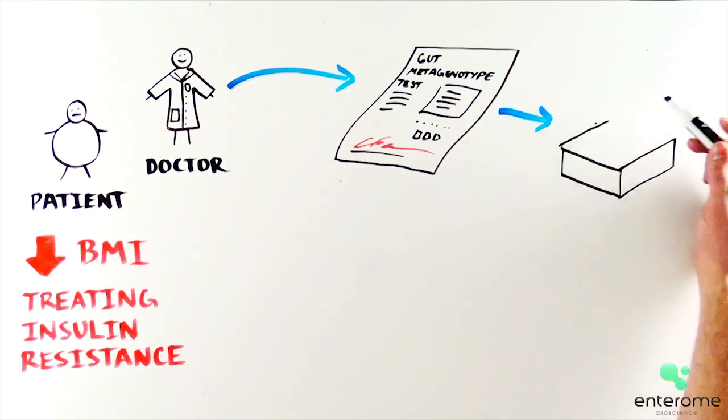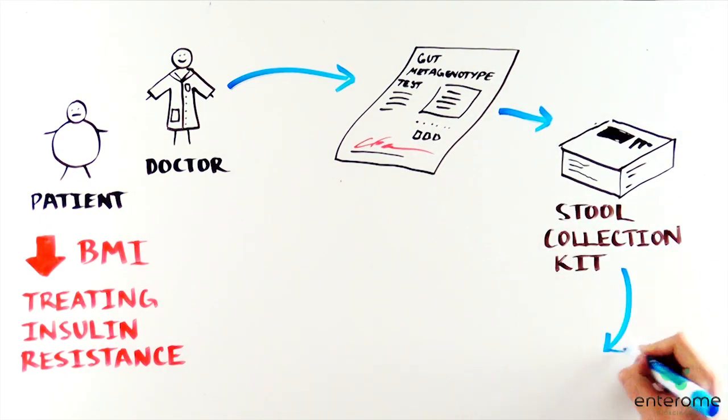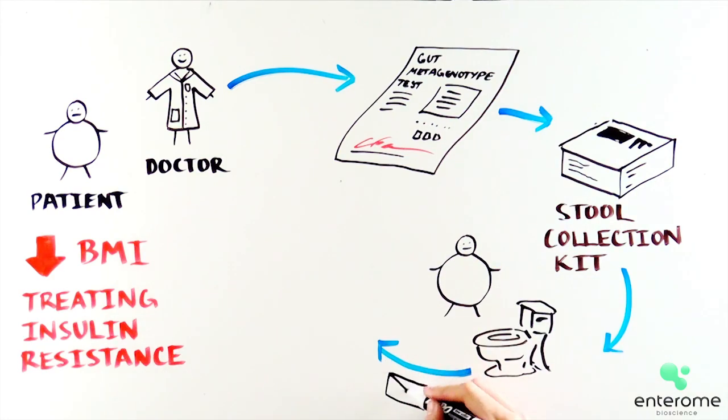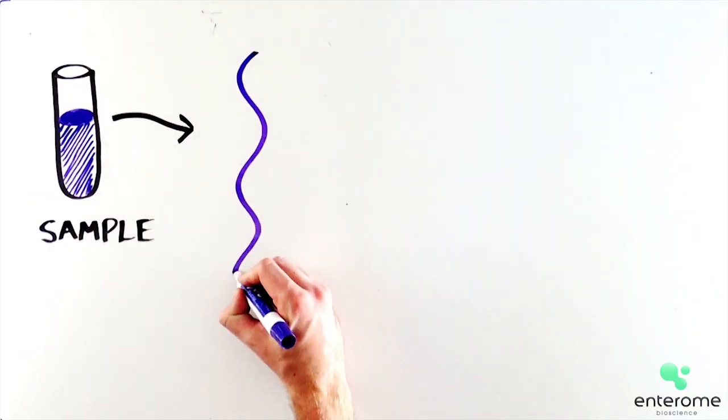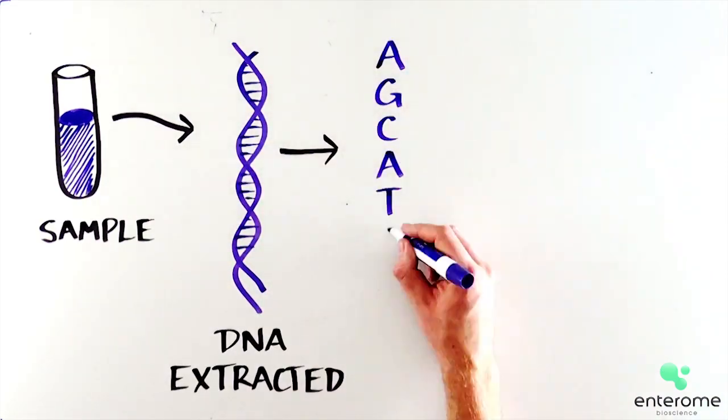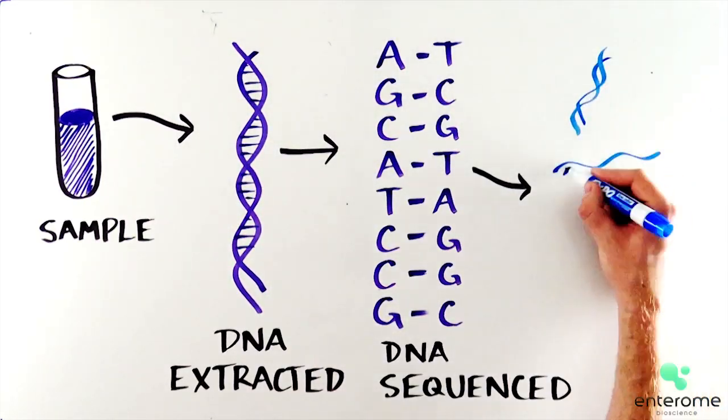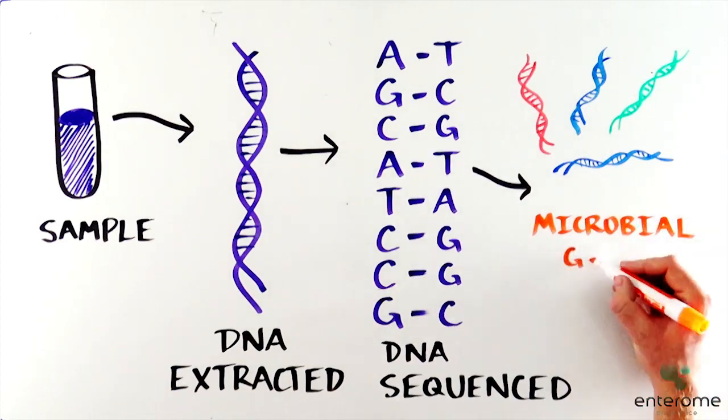The patient is given a take-home stool collection kit. Once collected, the sample is returned by regular mail at room temperature to the laboratory. There, DNA is extracted from the stool and sequenced to provide a profile of all of the microbial genes present in the stool.